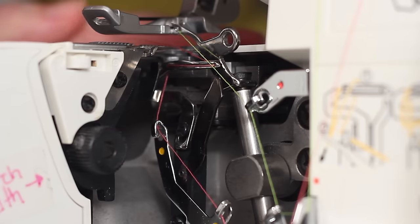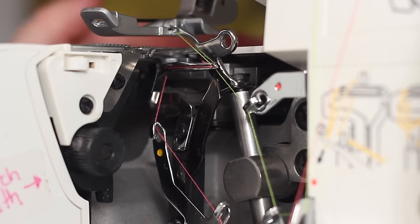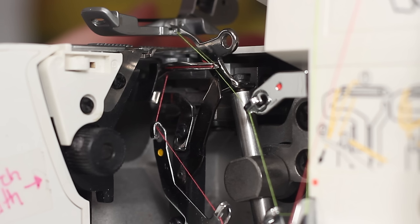And there you go. So, both loopers are threaded. Make sure the ends are pulled under into the side of the presser foot. Now it's time to thread the needles.